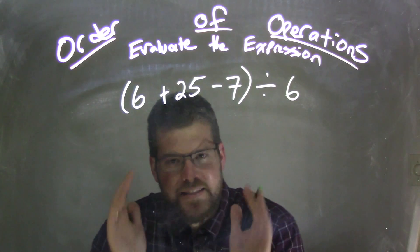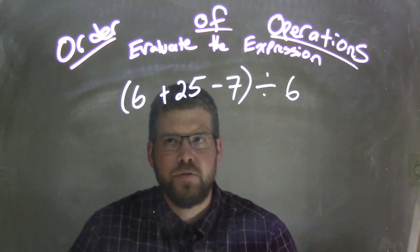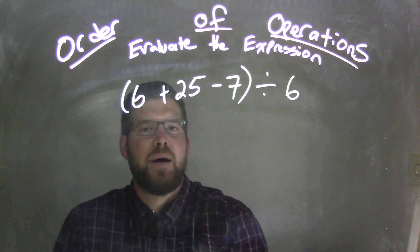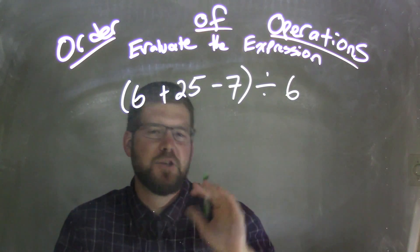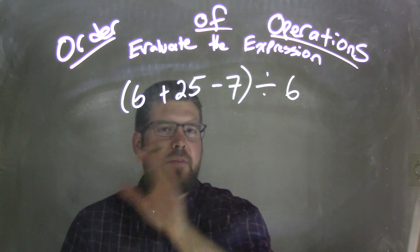and we need to deal with what's inside of those parentheses first. So inside the parentheses, we have 6 plus 25 minus 7, right? Addition and subtraction are on the same level, so let's read from left to right.